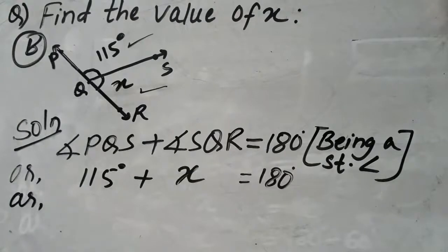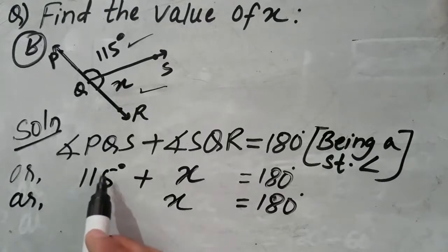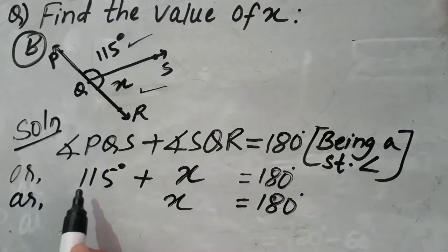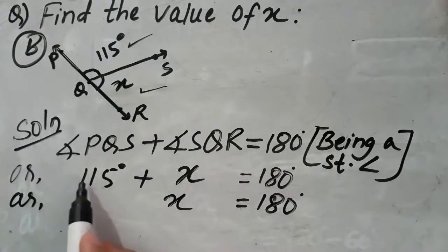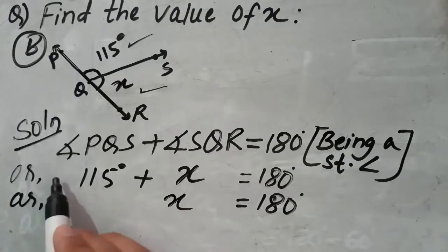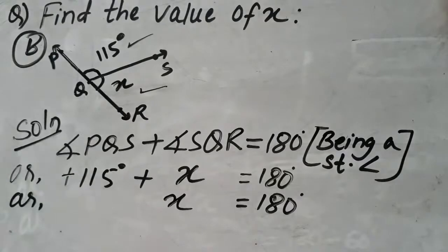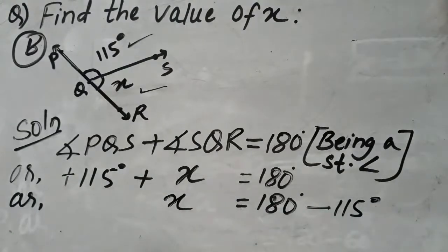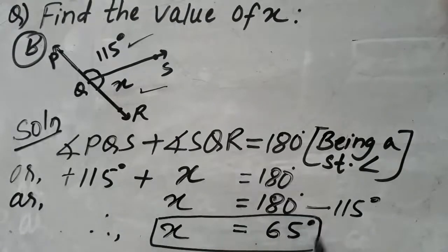Now students, to find the value of x we need to change the side of 115 — we will bring 115 towards the other side. Before bringing 115 to this side, we check its sign. The sign of 115 is plus. So whenever plus changes its side, it becomes minus 115. Therefore x is equal to 180 minus 115. So in this way, the value of x is 65 degrees.